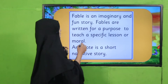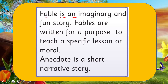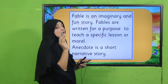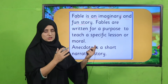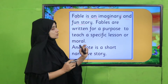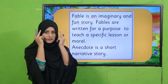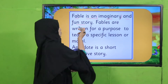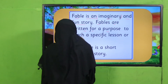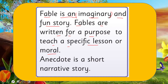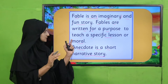So what is a fable? A fable is an imaginary and fun story. Imaginary story means that we imagine it — some stories are real and based on reality, and some stories exist only in our imagination. A fable is an imaginary story. Fables are written for a purpose — to teach us a specific lesson or moral. An anecdote is a short narrative story. Both fables and anecdotes are types of stories that have a lesson.